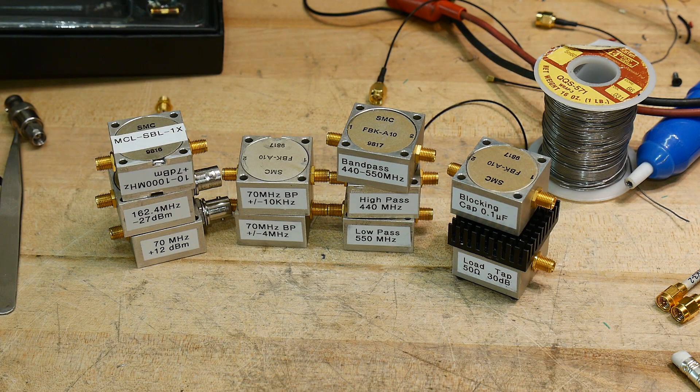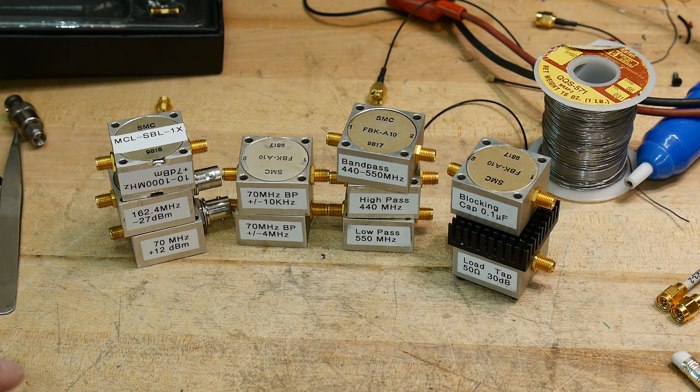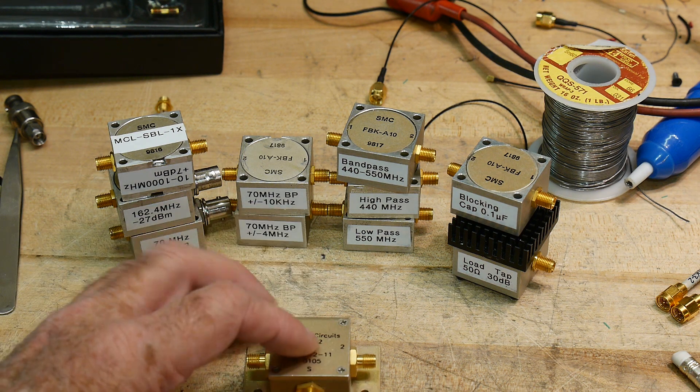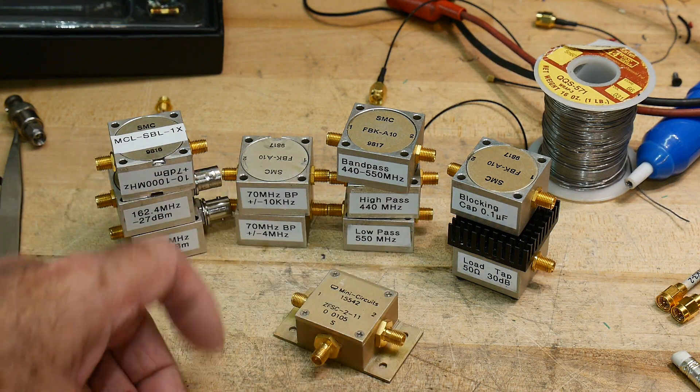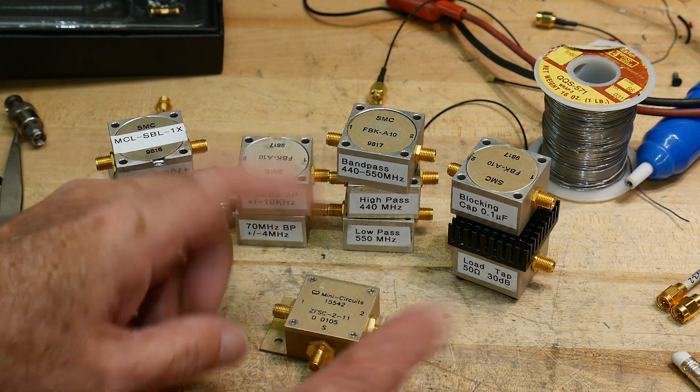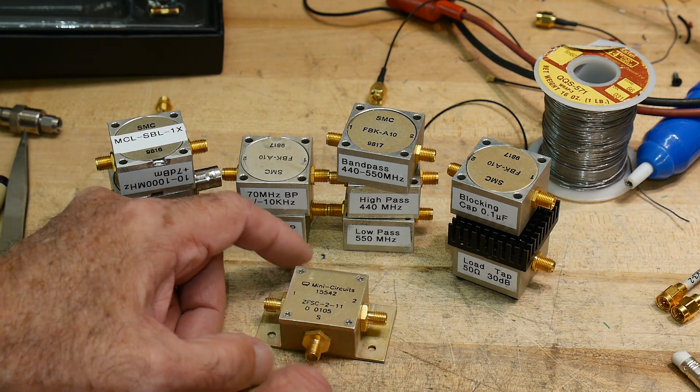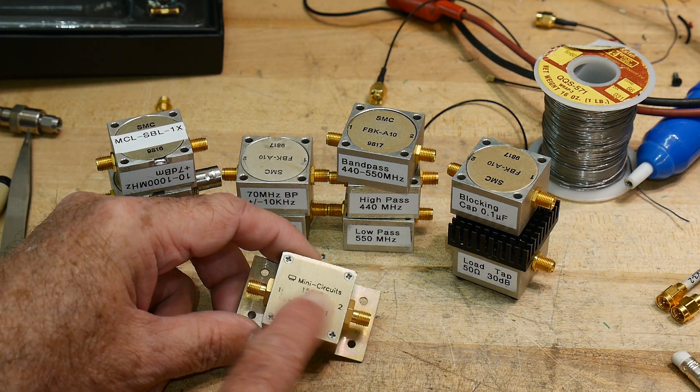But in the meantime, I won another eBay item. I made an offer. I think I got this for $8. Something I've wanted. I've been using a BNC version of a power splitter, and I wanted an SMA version, and this is a little Mini-Circuits unit.